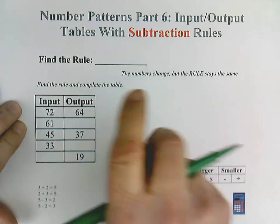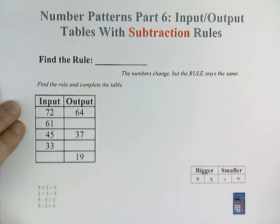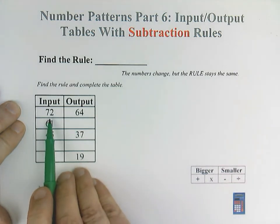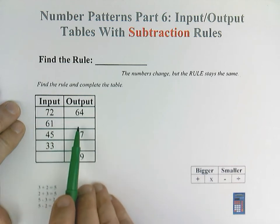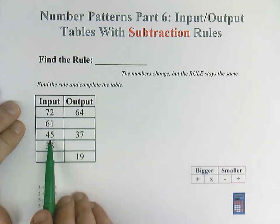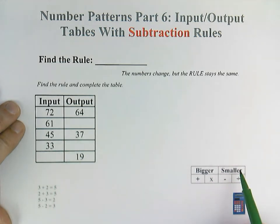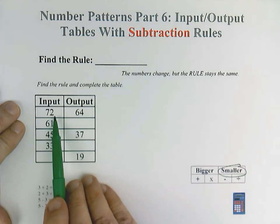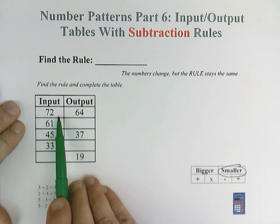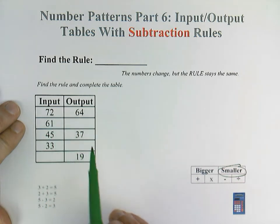Go ahead and try this one. Find the rule. So pause if you want. Okay, how'd you do? 72 input, 64. So it's getting smaller, right? I'm going to skip this one because there's nothing here, but go down this one. 45, 37. It's getting smaller. Once again, I can rule out division because you cannot divide 72 by any whole number and get 64. So this is a subtraction rule.